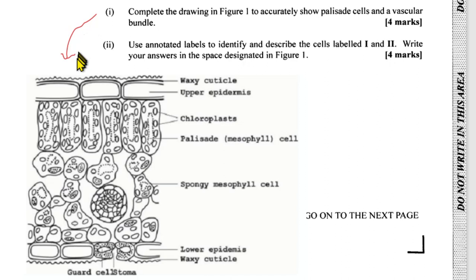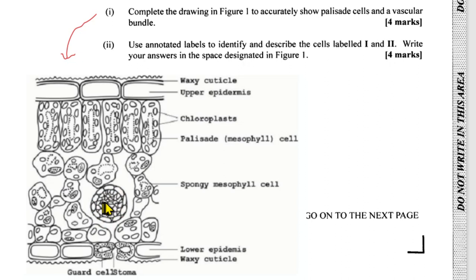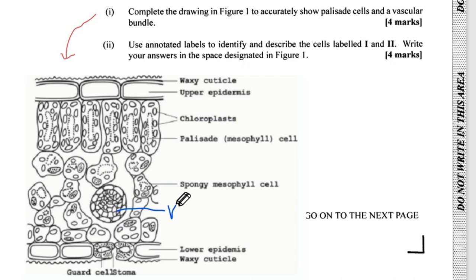Part 1: complete the drawing in Figure 2 to accurately show the palisade cells and a vascular bundle. This is the same drawing as above but with more content filled in and labelled. The only things we need to fill in are the palisade mesophyll layer, which is notably loaded with chloroplasts, so photosynthesis occurs at extremely high rates there when sunlight enters through the upper epidermis. The vascular bundle (VB) is within the spongy mesophyll and contains the xylem and phloem for water and sucrose transport respectively.